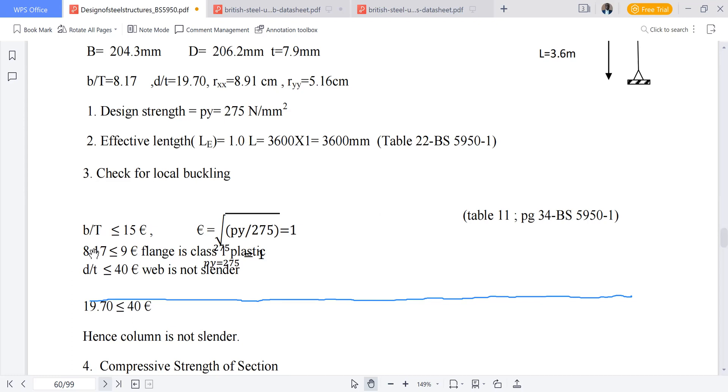Then in terms of slenderness, we look at d over t. D over t is equivalent to 19.70. The limit for it to not be slender is 70 epsilon. Since 19.70 is less than 40, web is not slender.